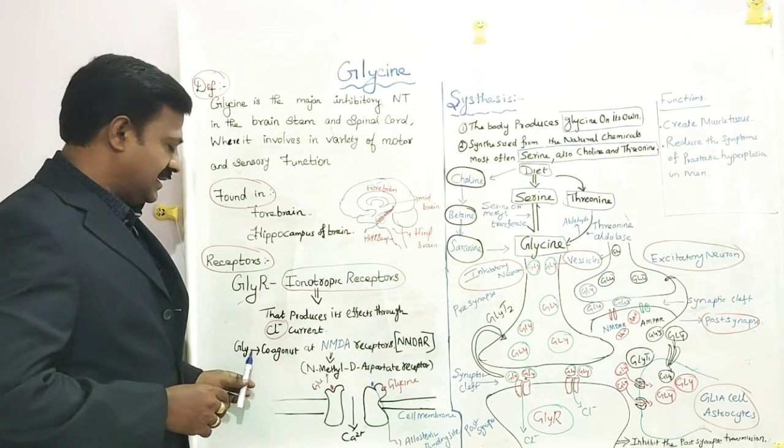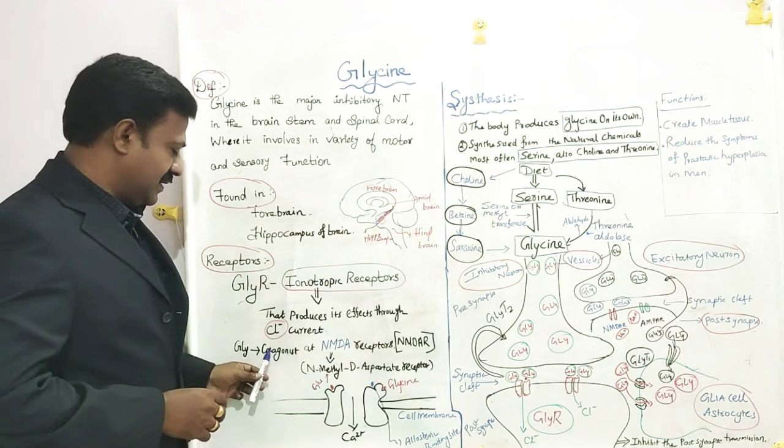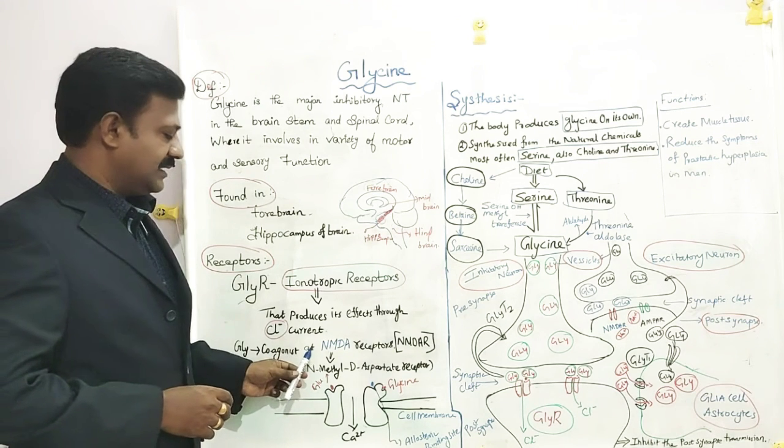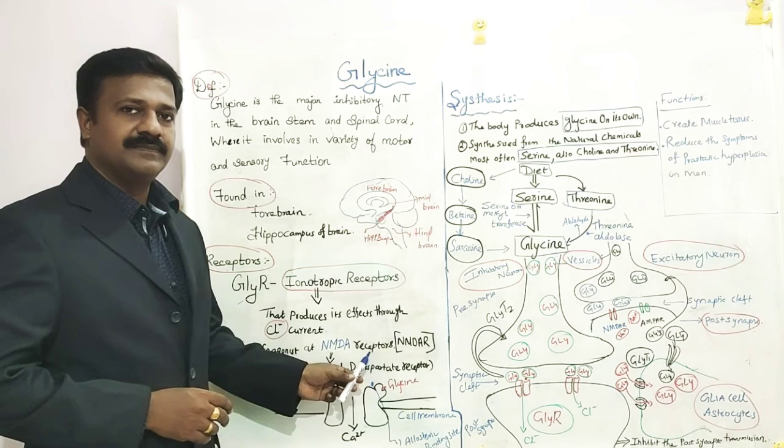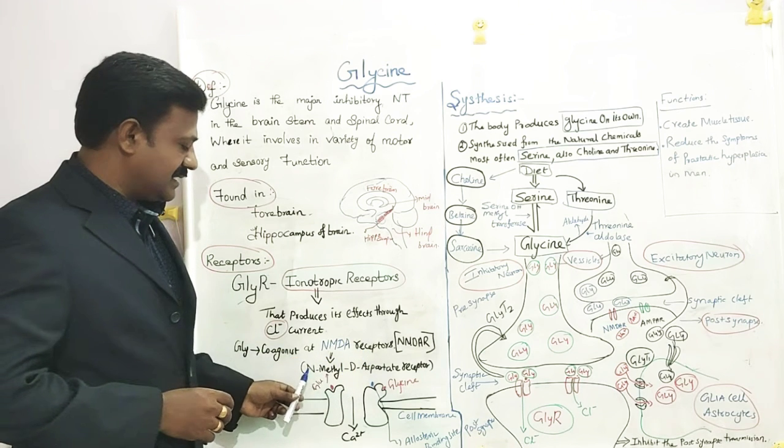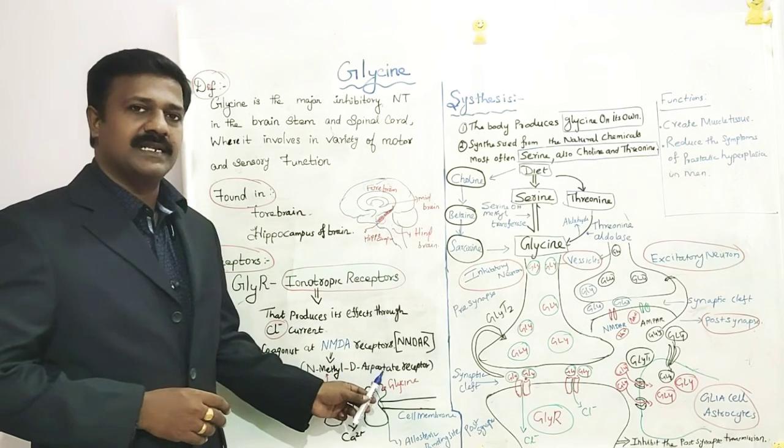Glycine neurotransmitters also act as a co-agonist at NMDA receptors. NMDA means N-methyl D-aspartate receptor.